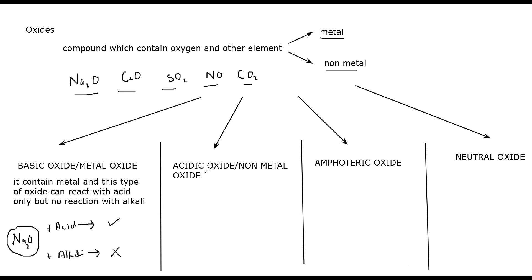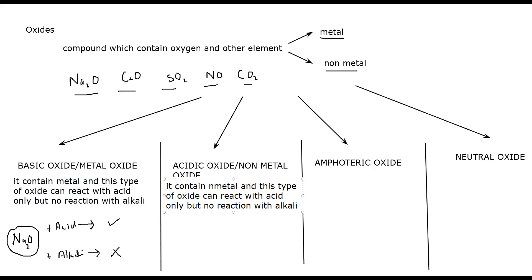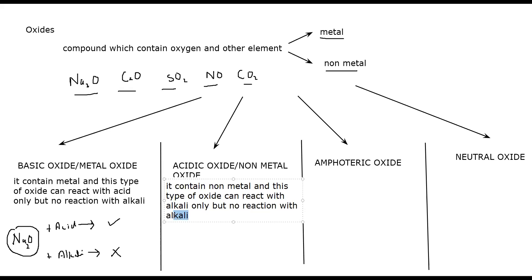The second type of oxide is known as acidic oxide. It is the opposite of basic oxide. This acidic oxide contains a non-metal. And this type of oxide can react with alkali only — but no reaction with acid. So it does not react with acid; only it reacts with an alkali, and it contains a non-metal.